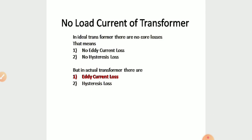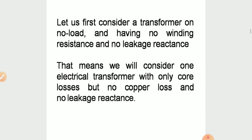No-load current of transformer. In an ideal transformer there are no core losses, which means there is no eddy current and no hysteresis loss. But in an actual transformer there is eddy current loss and also hysteresis loss. So now let us consider an electric transformer with only a core loss, but with no copper loss and no leakage reactance.